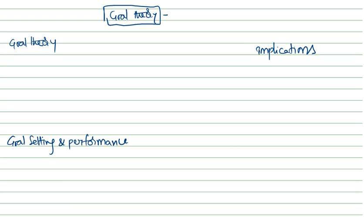Goal theory is considered to be a heading of motivation to work, where we are trying to focus mostly on how we can make people work. It is what we call goal theory — it is people's goals or intentions which play an important part in determining behavior. We are mostly focused on how we can make them work towards what they want to achieve.